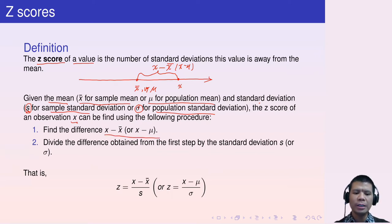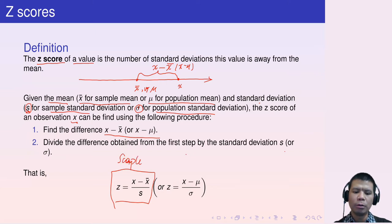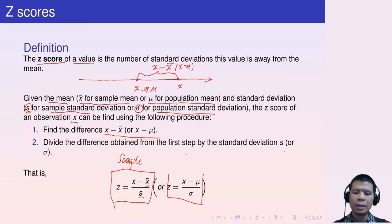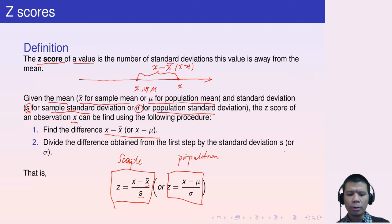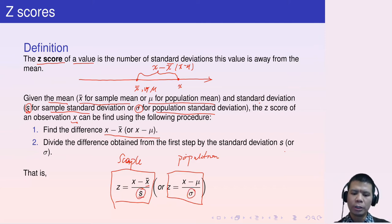The z-score of an observation x is found by first finding the difference, then dividing that difference by the standard deviation. For a sample, z equals x minus x-bar over s. For the population version, z equals x minus mu over sigma. So in both cases, we find the difference x minus the mean, then divide by the standard deviation — s for sample and sigma for population. That is the definition of z-score.